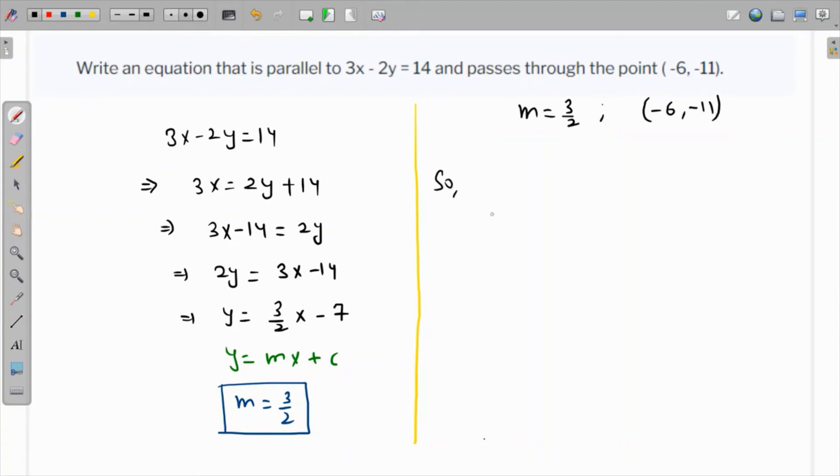So using the point slope form the equation of the line will be y minus minus 11 is equal to m which is 3 over 2 times x minus minus 6. So this will become y plus 11 is equal to 3 over 2 times x plus 6.